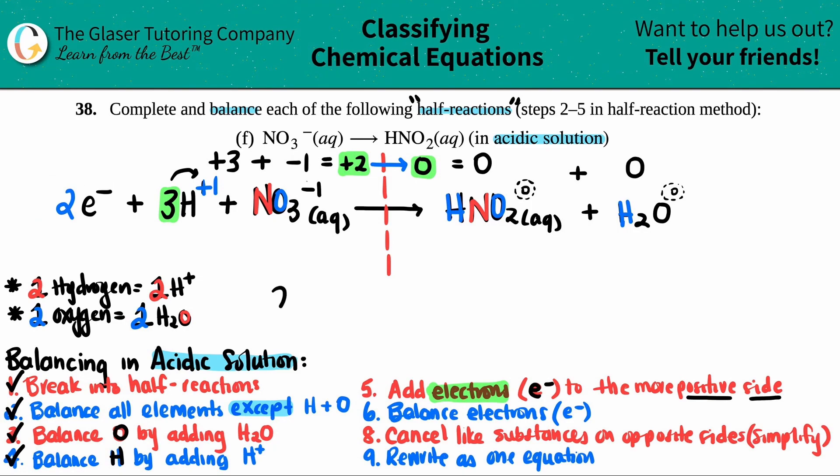So the overall answer would be 2e- plus 3H+ plus NO3- aqueous, if you want to write the states. And then HNO2 aqueous and then water. There's really nothing that we can cancel out. Everything is unique and there's no the same molecules on both sides. So we can't cancel anything out. So this would be the answer.